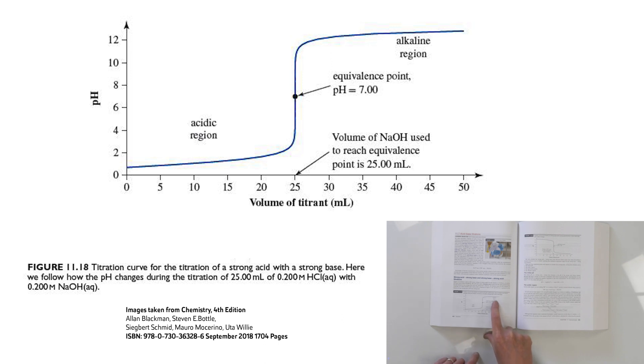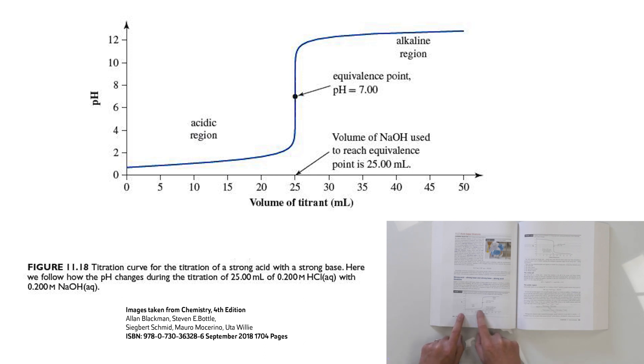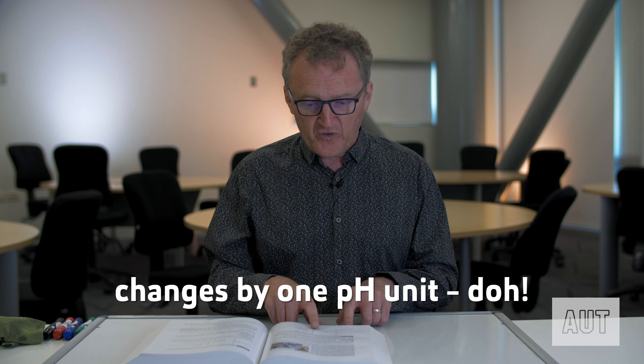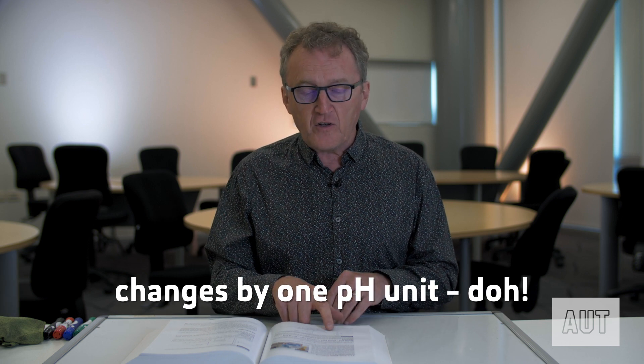After you hit your equivalence point, the pH is greater than 7. You might notice that in the acidic region the pH doesn't change very much even as you add quite a lot of sodium hydroxide, and think that's a buffer solution. But there's another part to the definition of a buffer solution: a buffer solution has to resist change in pH on reasonable dilution. In this case, if you dilute the solution tenfold, the pH will change by one order of magnitude — so it doesn't resist change on reasonable dilution. That is in fact not a buffer solution.